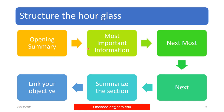The hourglass sequence is: opening summary, most important information, next most important, next segments, summarize actions, and link your objectives into summarized sections. When you discuss the most important information, you segregate it into different elements to help understand and develop confidence in what you plan to deliver. Then you move to the next most important step and summarize each section.